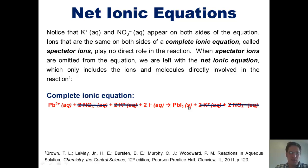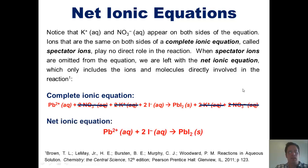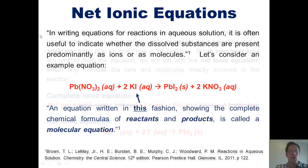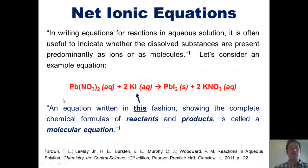Everything that is left we take down into something called the net ionic equation. The net ionic equation only shows the ions that actually do something. So if you were to take lead nitrate and potassium iodide and throw them into water, they would do a partner swap.